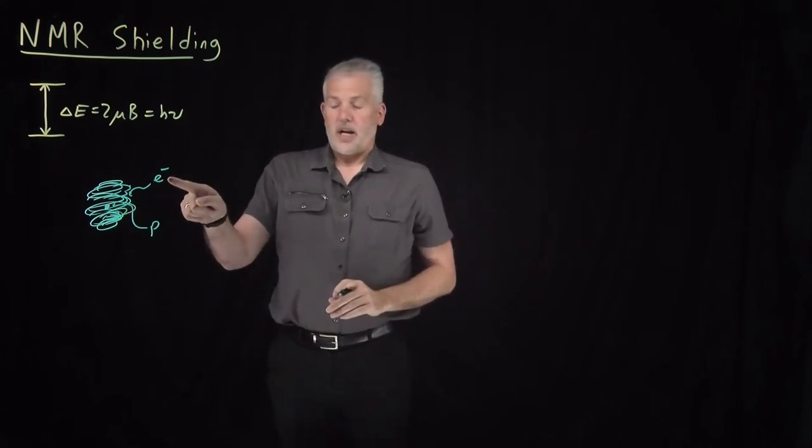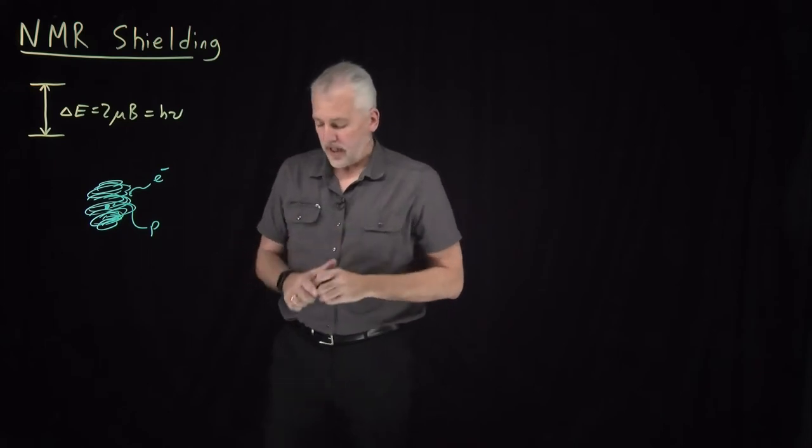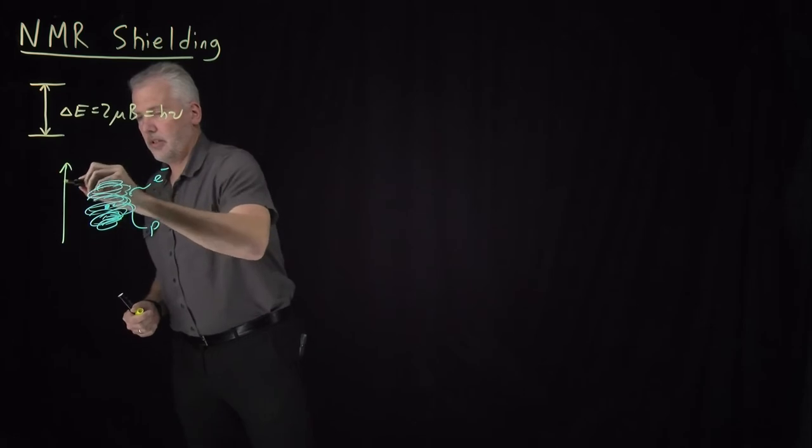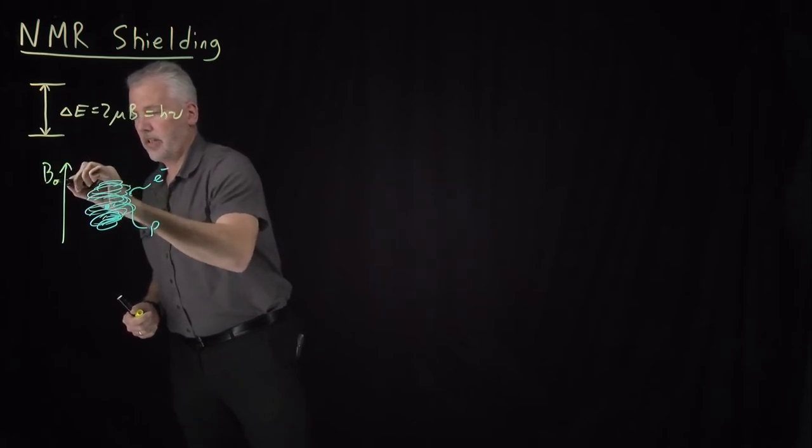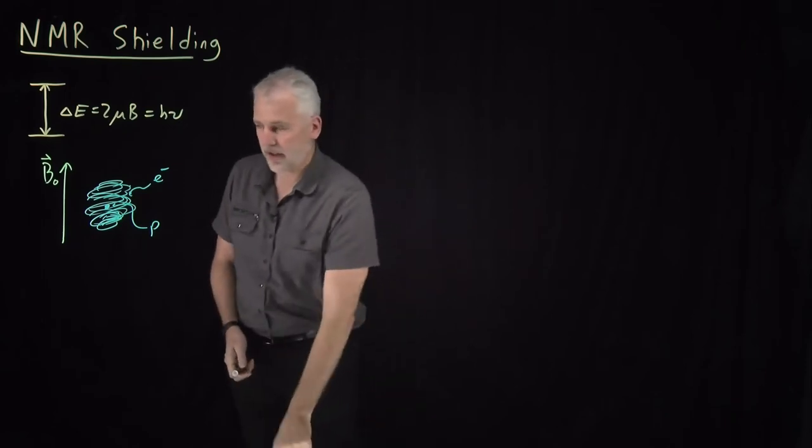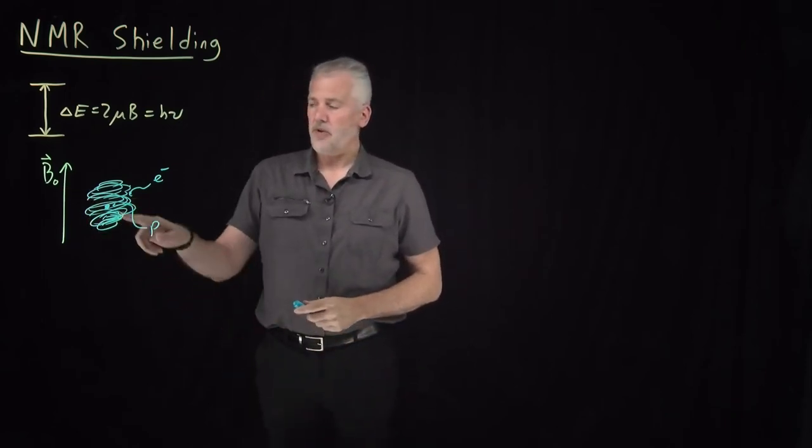The electron has an opposite charge from the proton. If we apply a magnetic field, I'll call that field B0, exert a magnetic field in the vicinity of this hydrogen atom.